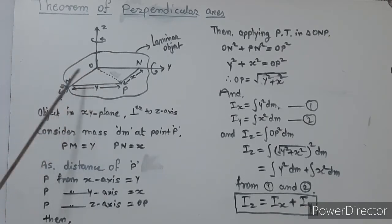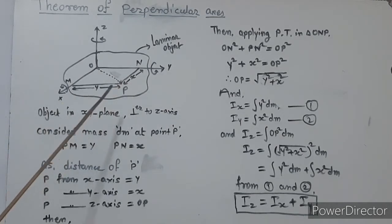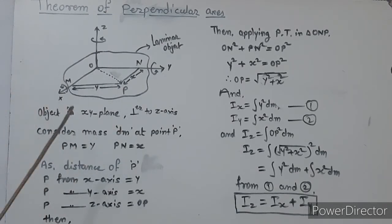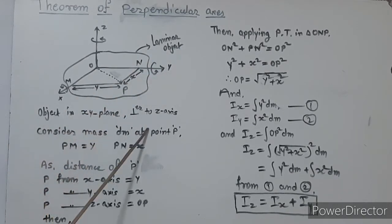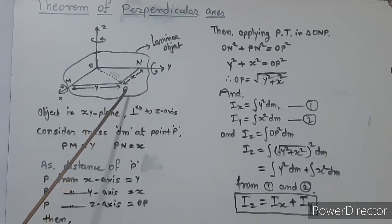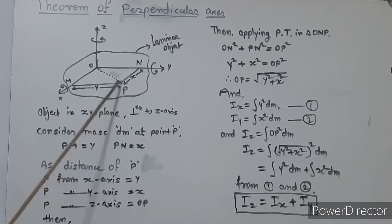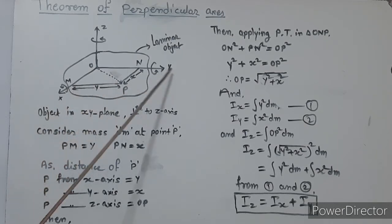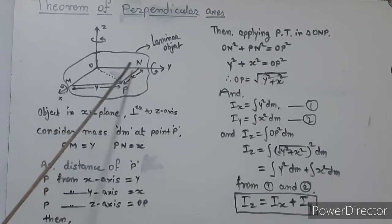We consider the moment of inertia about the x-axis and about the y-axis. For the perpendicular axis theorem, consider a laminar object in the XY plane. Consider a small mass dm at point P. The distance from P to the y-axis is x, and the distance from P to the x-axis is y.